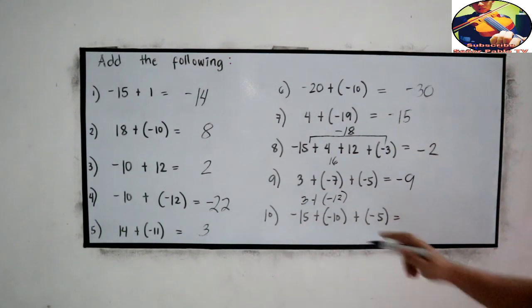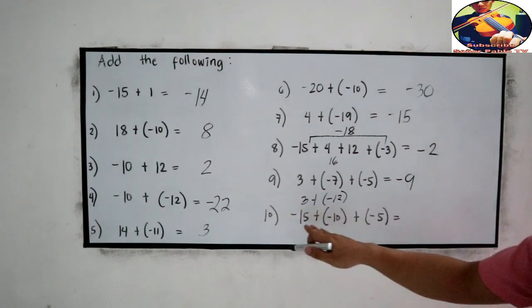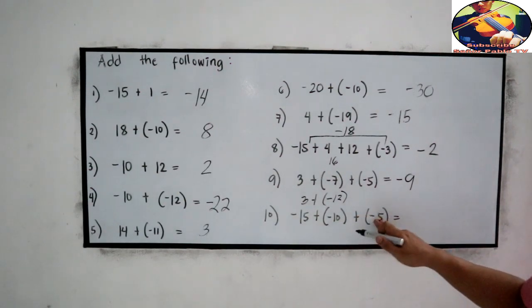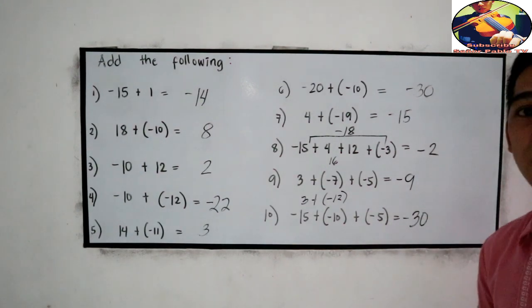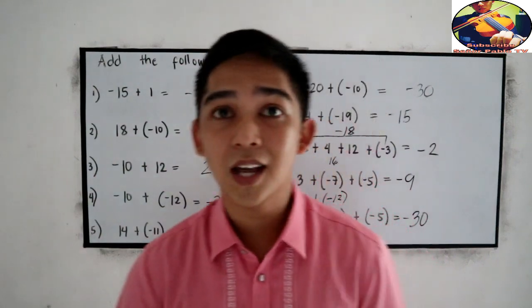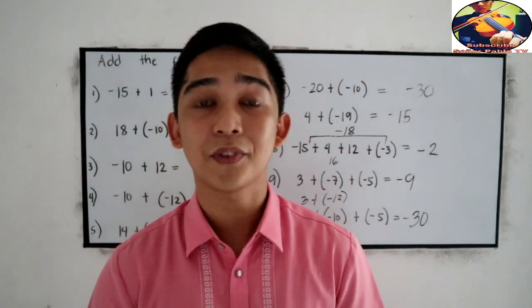Number 10: All negative. So add the numbers. 15 plus 10, 25 plus 5, 30. What is their sign? Negative. So negative 30. I am hoping that you got 10 out of 10.